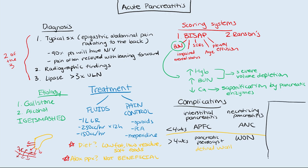Other complications include ARDS — pancreatitis is one of its causes — and chronic pancreatitis, which can cause pancreatic insufficiency and malabsorption. Notably, with chronic pancreatitis the lipase levels may be normal even in acute-on-chronic flares because the pancreas is burned out. You can also develop splenic vein thrombosis since the splenic vein runs right behind the pancreas, creating higher clot risk with inflammation. Generally you don't anticoagulate unless the clot is extending into the portal or hepatic veins; the main treatment is addressing the underlying cause.